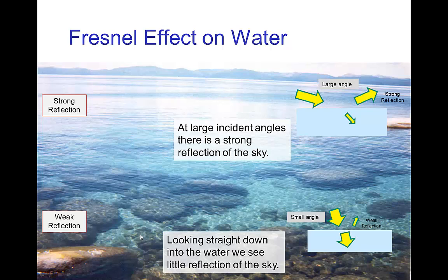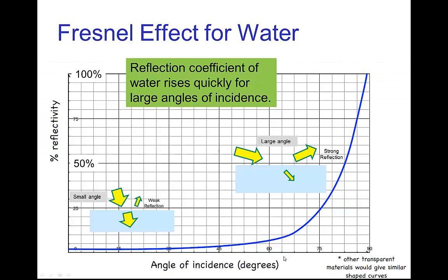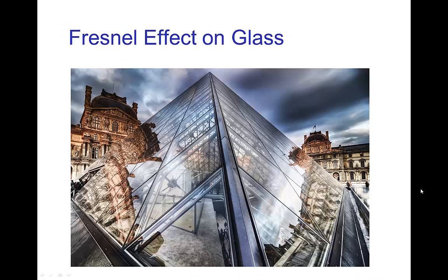In the foreground, it's a relatively weak reflection of the light from the sky — in fact it's so weak we can easily see into the water and see the rocks at the bottom of the lake. Here's a graph showing the reflection coefficient as a function of angle. Starting at small angles, it's only about 2% for water and air, and it rises slowly until around 60 degrees, then rises rather rapidly. For other materials such as air and glass, it's a similar curve with slightly different numbers. Here you also see the Fresnel effect on glass — some parts where we're seeing through the glass, and some parts where we see a strong reflection.